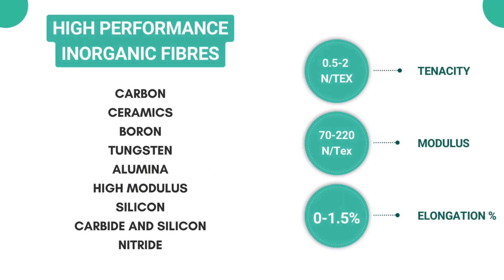The fourth category is high performance inorganic fibers, including carbon, ceramics, boron, tungsten, alumina, high modulus silicon carbide, and silicon nitride. They have a comparably higher tenacity than conventional fibers, ranging from 0.5 to 2 newton per tex, and a high modulus, indicating they are stiffer and deform less when subjected to stress.